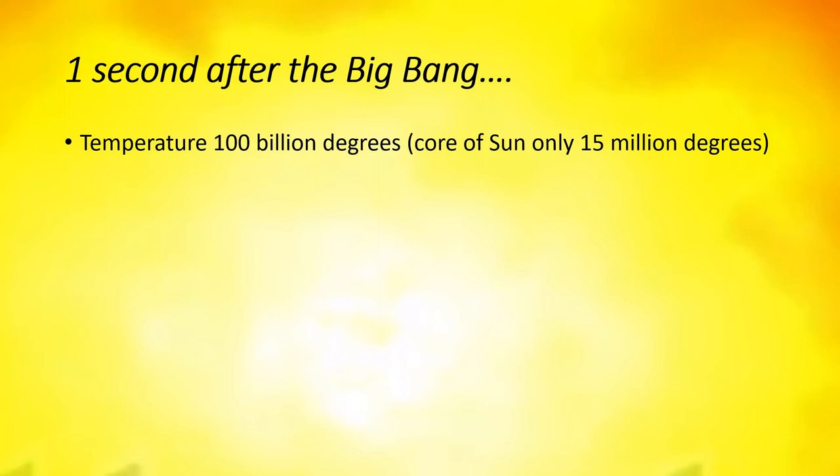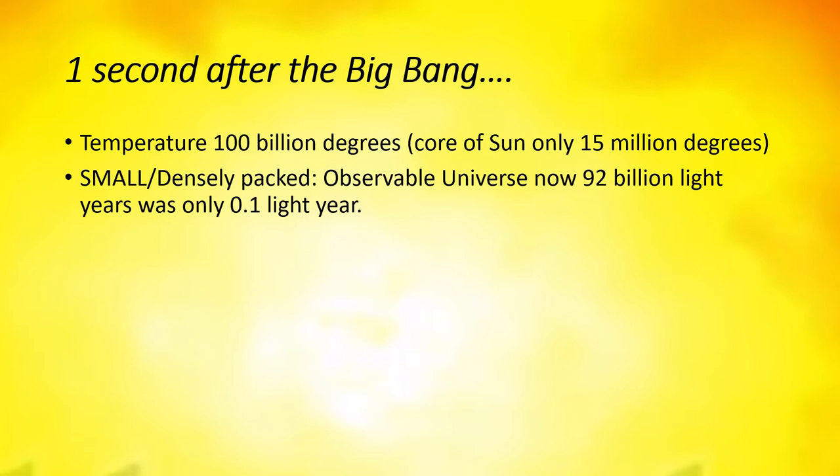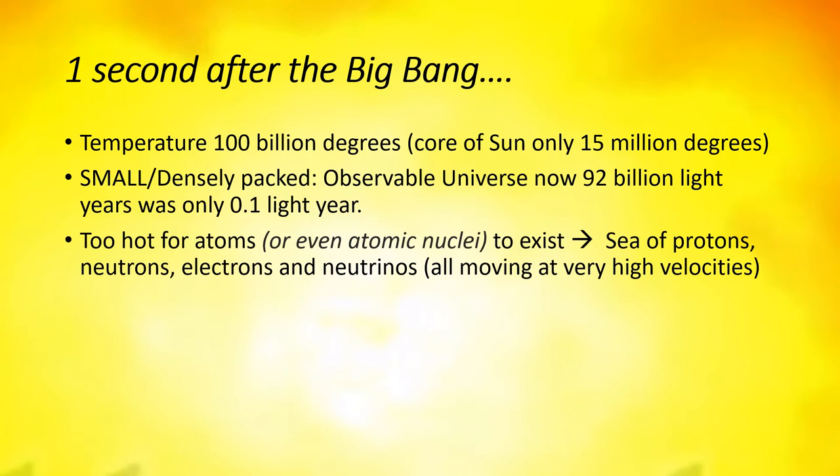At one second old, the universe was almost unimaginably hot. Its temperature was a hundred billion degrees. For comparison, the center of the sun, where it generates all its energy, is only 15 million degrees. The observable universe was much smaller—it's now 92 billion light years in diameter; at one second old it was only 0.1 of a light year.